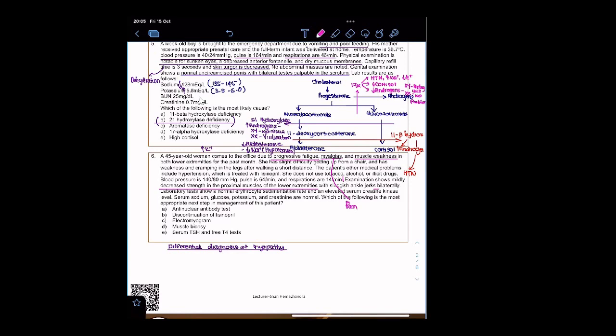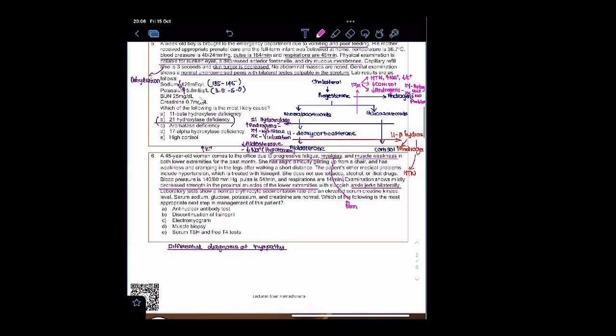We had a question previously about reduced muscle reflexes. What was the diagnosis in that question? Yes, hypothyroidism. Lab shows normal erythrocyte sedimentation rate and elevated serum creatine kinase. Why does creatine kinase elevate? Muscle break, muscle dysfunction. Serum sodium, glucose, potassium, and creatinine are normal. Which of the following is the most appropriate next step in the management of this patient?